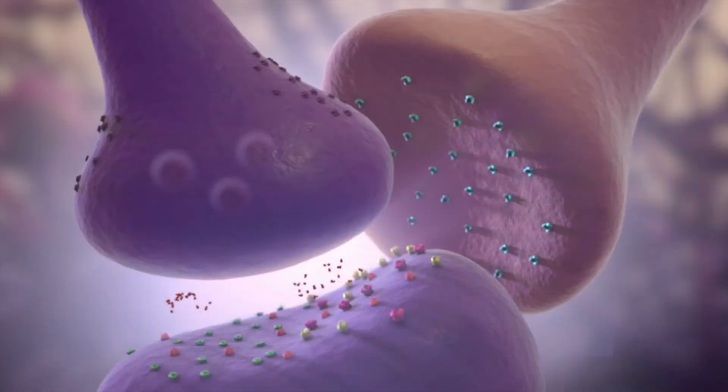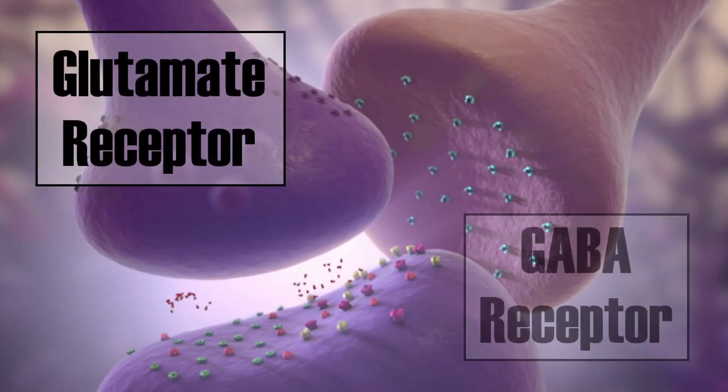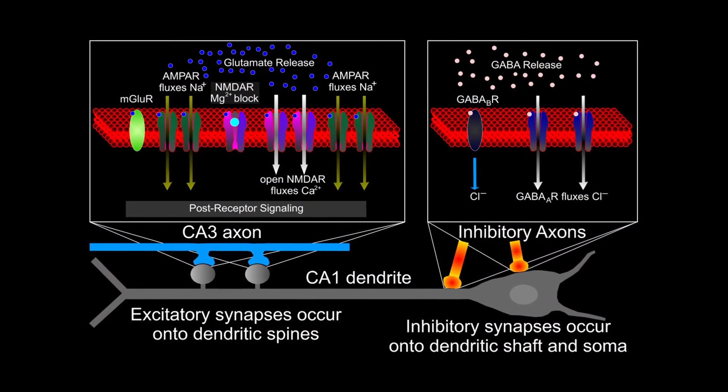Many neurons, such as pyramidal neurons, have both excitatory glutamate receptors as well as inhibitory GABA receptors. This means that the same neuron can be both excited and inhibited.